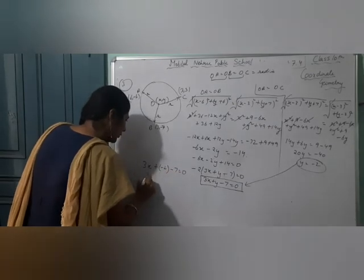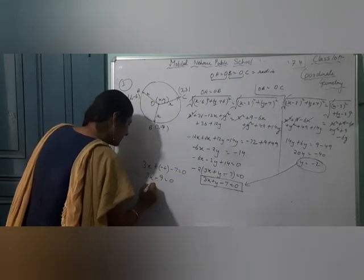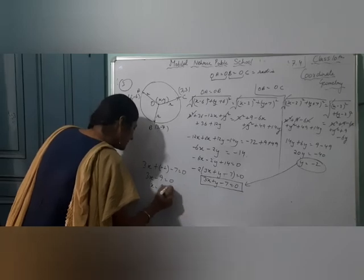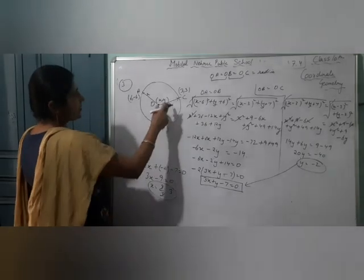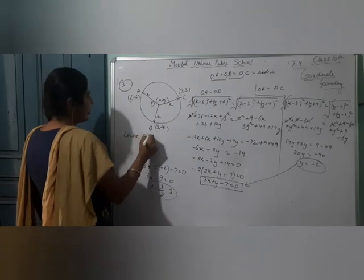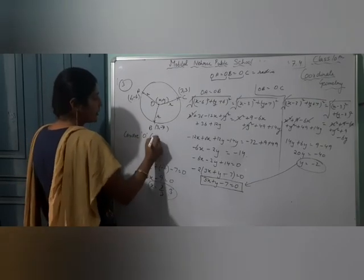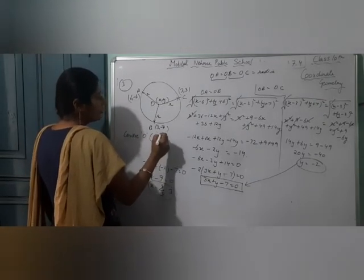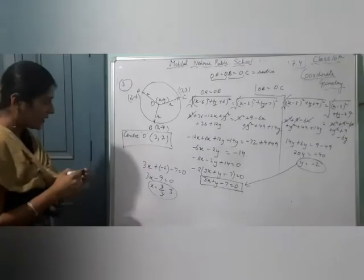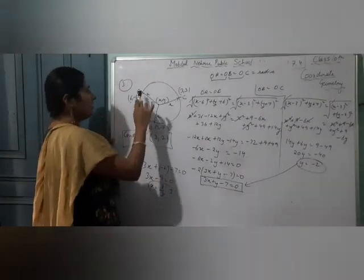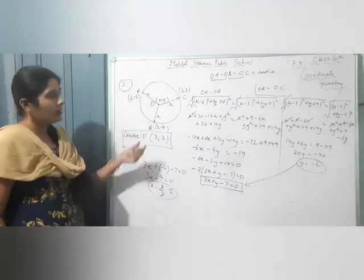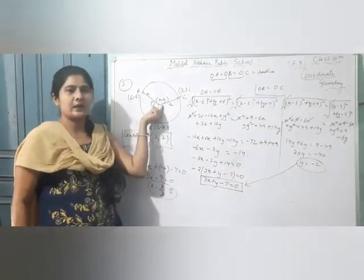So y = -2. Substituting y = -2 into 3x + y - 7 = 0: 3x - 2 - 7 = 0, so 3x = 9, x = 3. Therefore the center O has coordinates (3, -2). This is your answer.